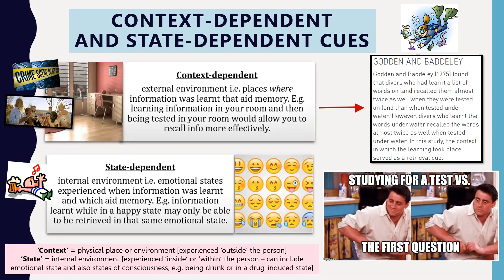Context dependent cues relate to the places where you learned information — they help you remember what you learned in that particular location. Context is about the external environment: it could be a room, a place where you experienced something, or even a crime scene. Police often take eyewitnesses back to a crime scene because that environment helps jog their memory — that's a context dependent cue.